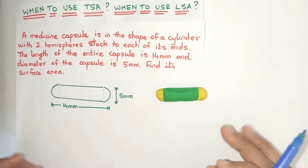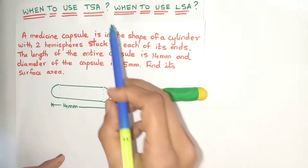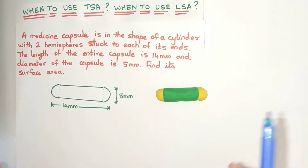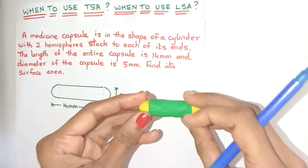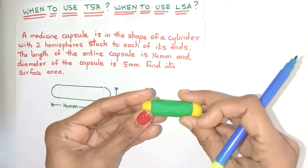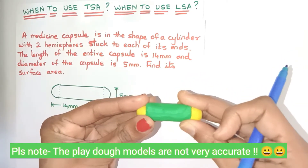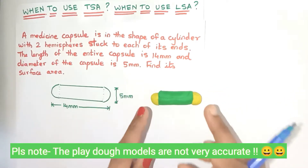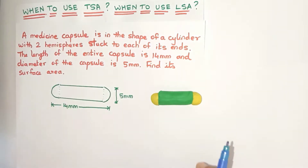Hello everyone. Today let's learn when to use the LSA and when to use the TSA when calculating areas of combinations of different solids. In this example we have a medicine capsule which is in the shape of a cylinder to which two hemispheres are stuck, and we have to find the total surface area of this capsule.